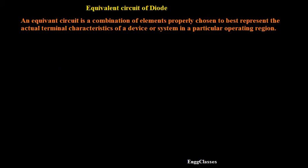Hello everyone, welcome to NG Classes YouTube channel for a video lecture series on basic electronics. In this video we will consider the concept of equivalent circuit of a diode. An equivalent circuit is a combination of elements properly chosen to best represent the actual terminal characteristics of a device or a system in a particular operating region.